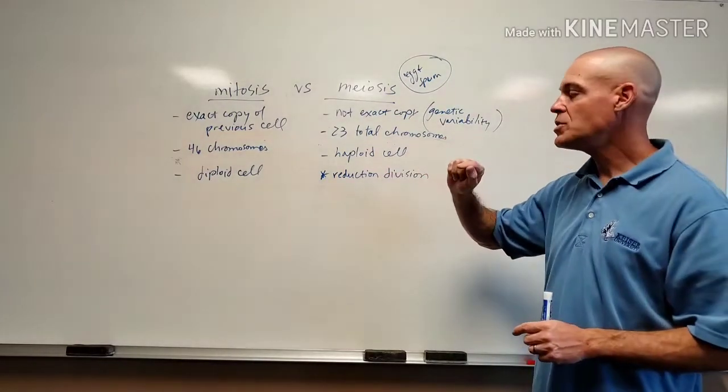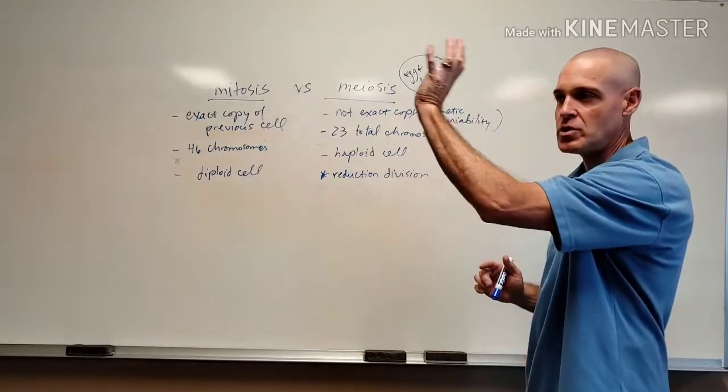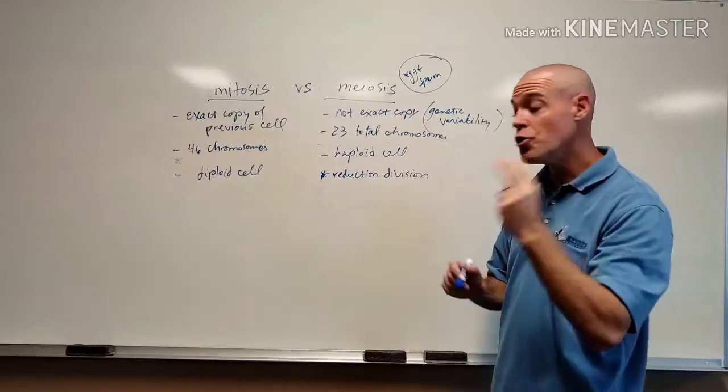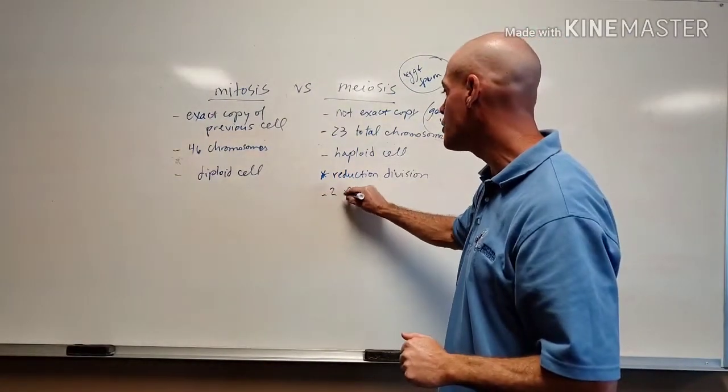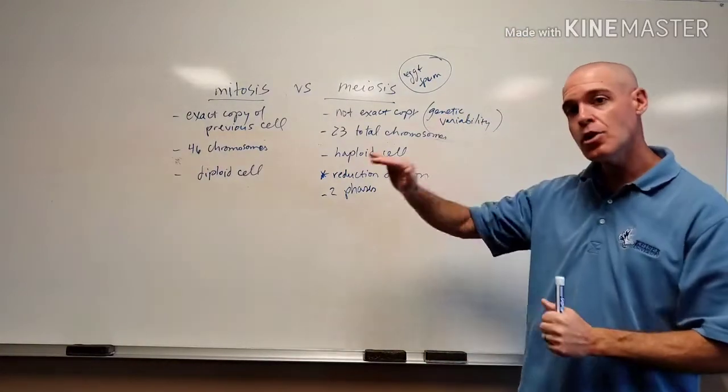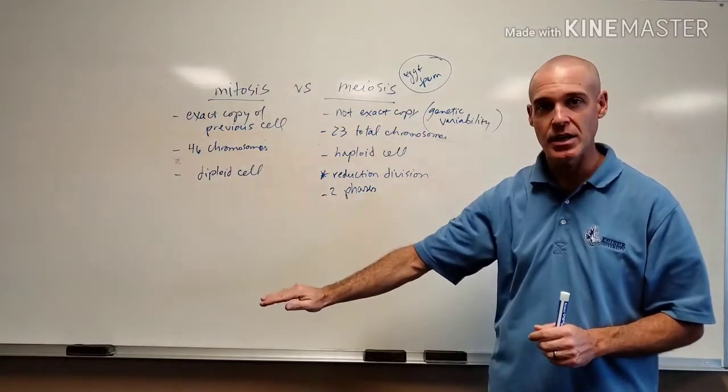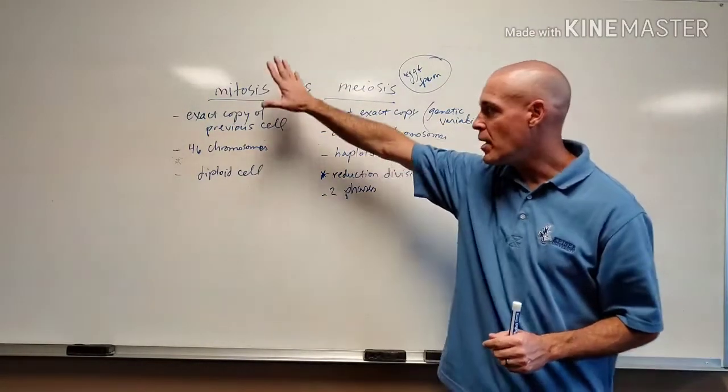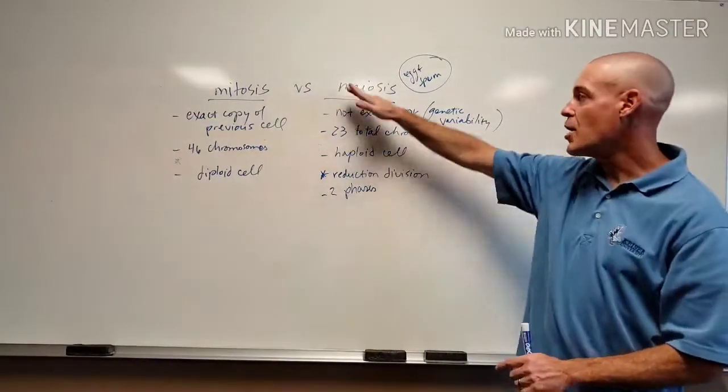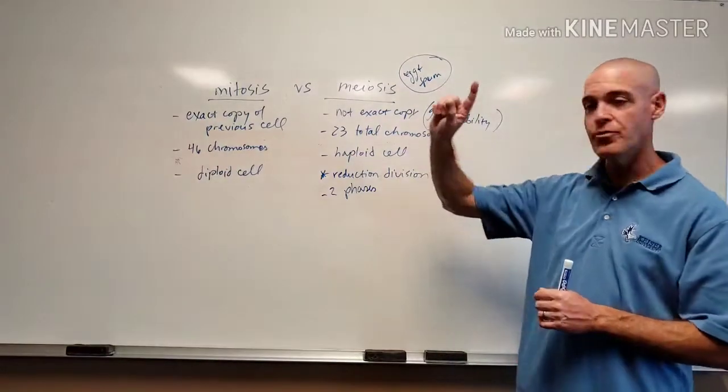So that is a key thing of meiosis. You're not getting exact copies. Also, meiosis is considered a reduction division. You are starting with 46 chromosomes, and you are going through two phases. We can put this down here. There is two phases to meiosis. It is going to go through the same five steps: prophase, metaphase, anaphase, telophase, cytokinesis.